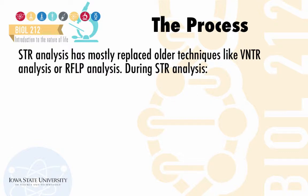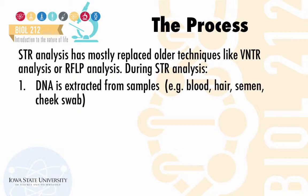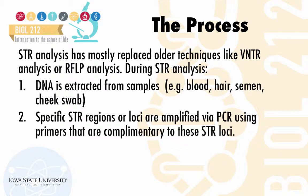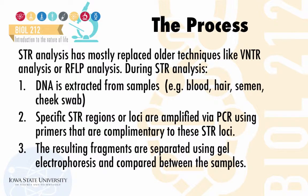During STR analysis, DNA is extracted from samples. The samples can be from blood, hair, semen, cheek swab, etc. Specific STR regions, or loci, are amplified via PCR using primers that are complementary to these STR loci, helping direct the polymerase to amplify these specific STR sequences. The resulting fragments are then separated using gel electrophoresis — either the traditional format or a more advanced format called capillary electrophoresis — and compared between samples, followed by detection and identification of the STR sequences.